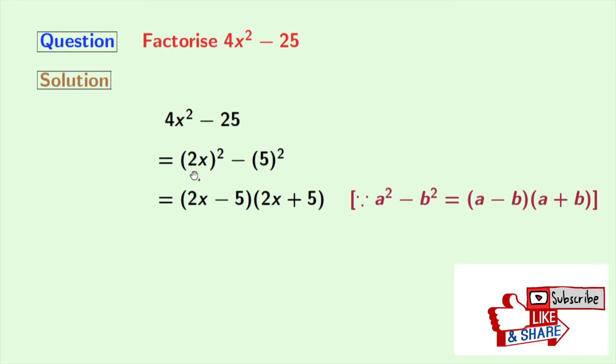Applying this, we will get (2x)² minus (5)² equals 2x minus 5 times 2x plus 5.